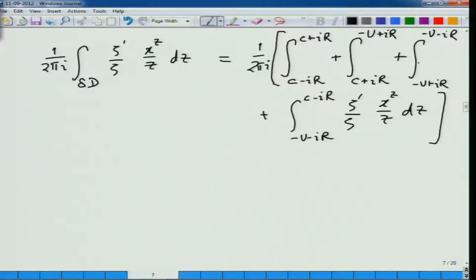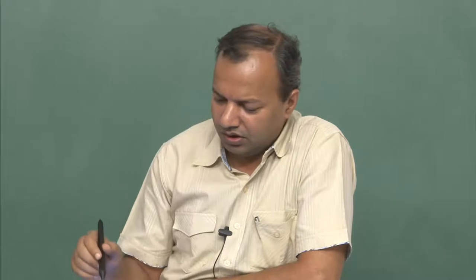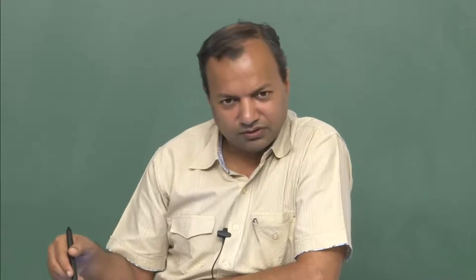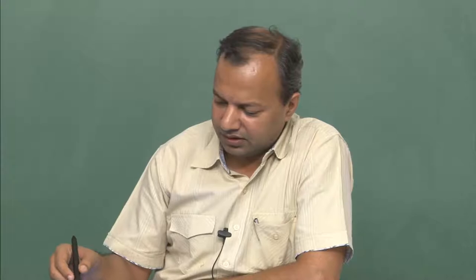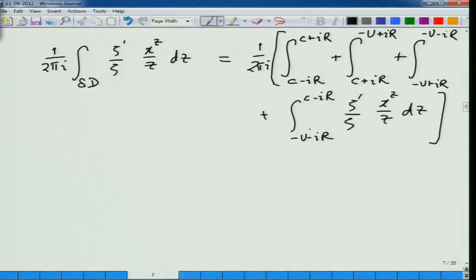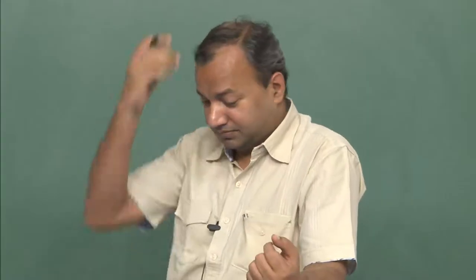Let us pick any one of the last three integrals to show that the total integral contribution is very small. The standard strategy is to take the absolute value, which is bounded by the absolute integral of the absolute values. Inside the integral the integrand is x^z/z which we can easily bound by taking absolute values, but ζ'/ζ is again an unknown quantity. We want to get hold of the absolute value of ζ'/ζ in these ranges as the integral varies, and put an upper bound on it to get an appropriate error bound.